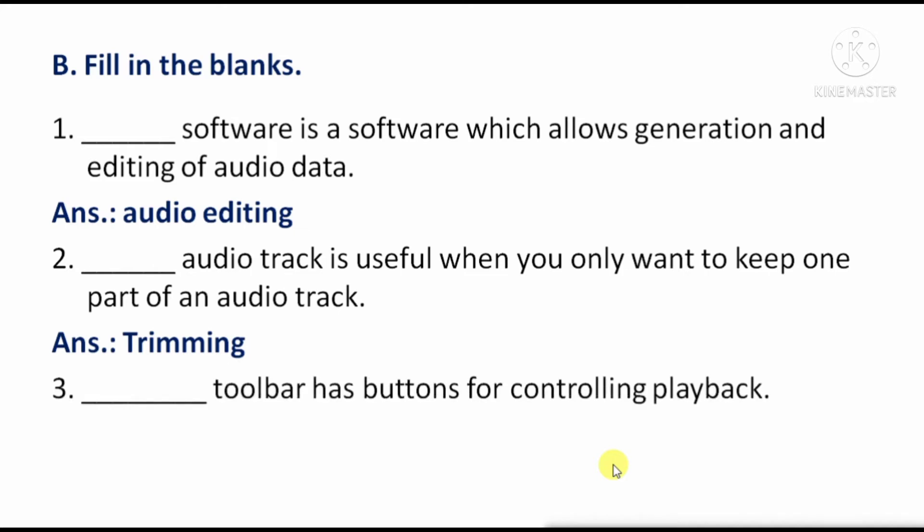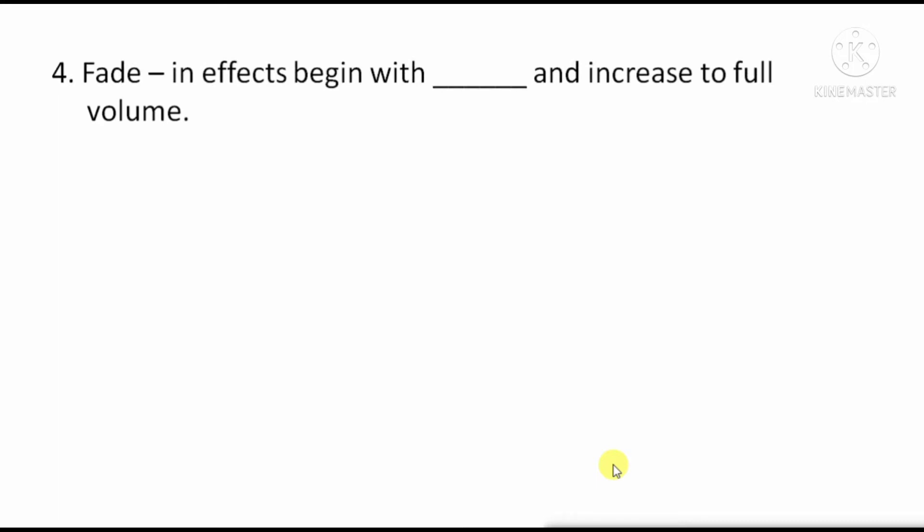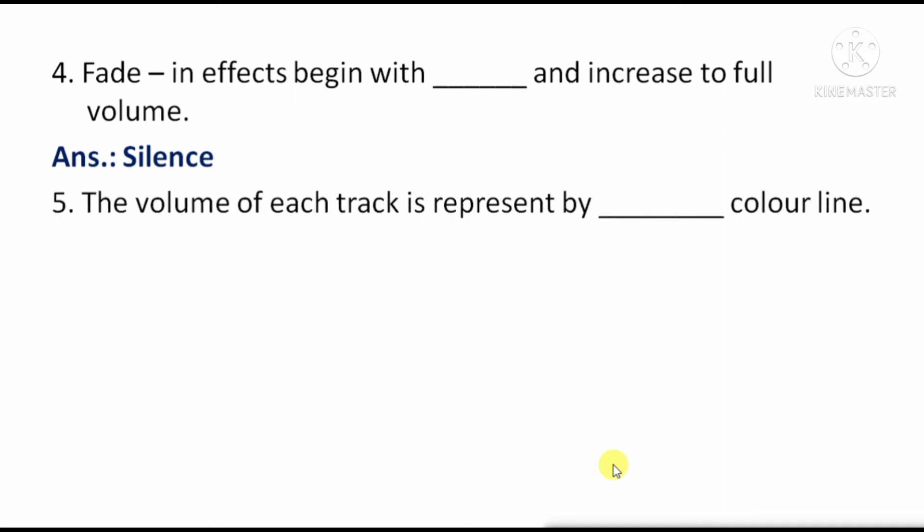Next — Blank toolbar has buttons for controlling playback; the answer is Transport toolbar. Next — A fading effect begins with blank and increases to full volume; the fading effect starts with silence and increases to full volume, so the answer is silence. Next — The volume of each track is represented by a blank color line; the answer is blue.